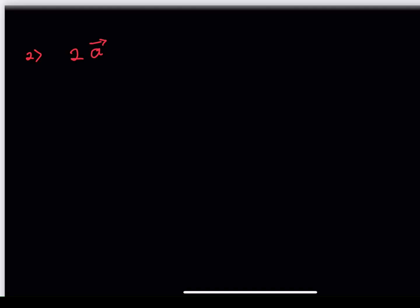With the next question, we compute 2 multiplied by vector a. Vector a is (1, 3), so 2 times (1, 3) gives us (2, 6), which is equivalent to 2i plus 6j. So that's our vector 2a.